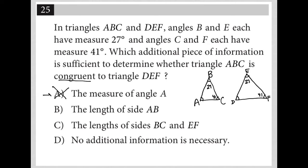Choice B, the length of side AB. If I just knew the length of side AB here, right, if I knew this was X, that doesn't tell me anything about the other triangle. So I'm not a big fan of that being sufficient for congruence.